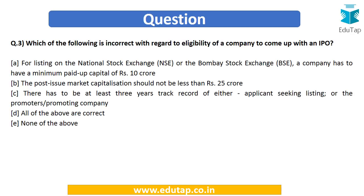Next question: which of the following is incorrect with regard to eligibility of a company to come up with an IPO? Options are: (1) for listing on NSE or BSE a company has to have a minimum paid-up capital of rupees 10 crore; (2) the post-issue market capitalization should not be less than rupees 25 crore; (3) there has to be at least a three-year track record of either the applicant seeking listing or the promoters or promoting company; (4) all of the above are correct, or (5) none of the above is correct.